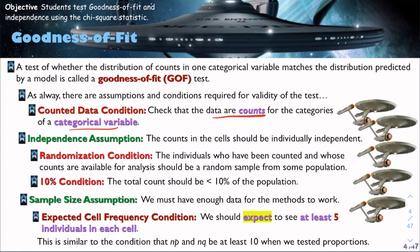With randomization, the individuals who have been counted and whose counts are available for analysis should be a random sample from some population. Additionally, it should be less than 10%. We should be familiar with those.